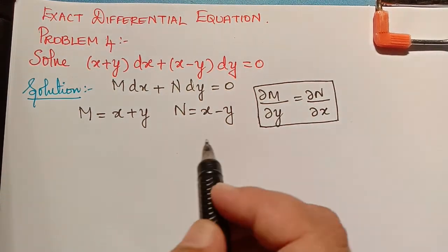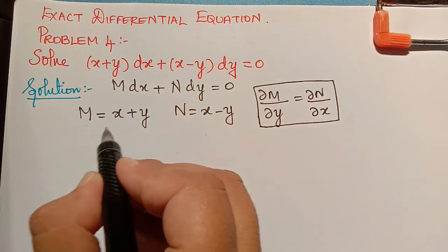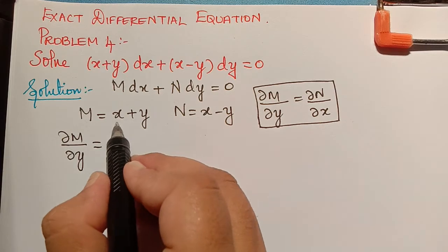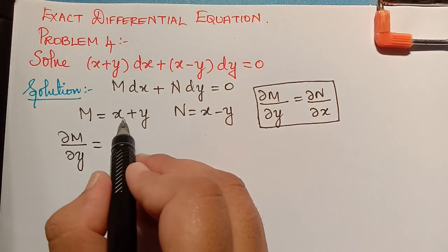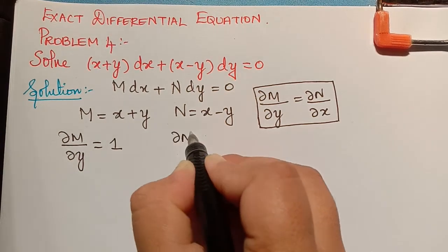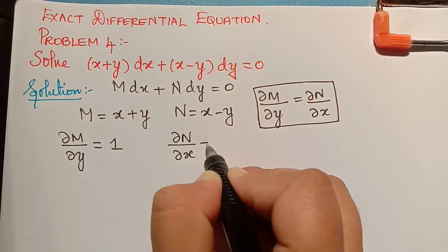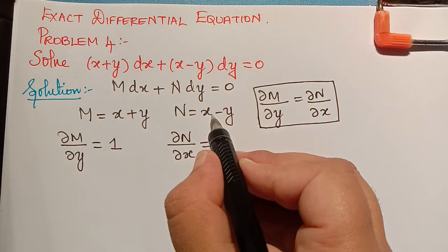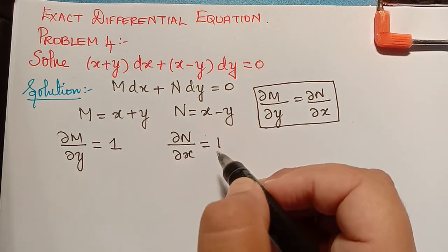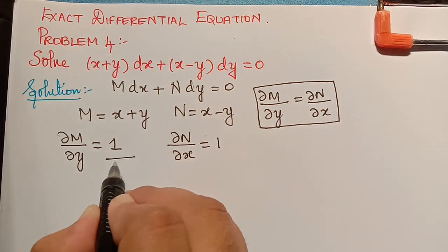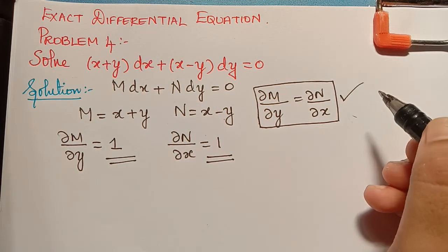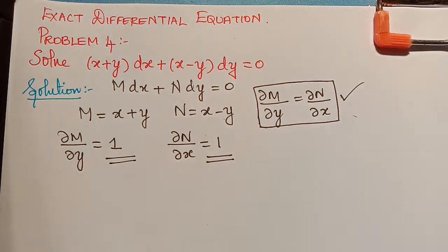Let us check this for the given equation. If M = x + y, then ∂M/∂y equals the partial differentiation with respect to y: for x it is 0 and for y it is 1. Similarly, ∂N/∂x equals the partial differentiation of (x - y) with respect to x: x gives 1 and y is treated as constant giving 0. Since ∂M/∂y equals ∂N/∂x, the given equation is an exact equation.